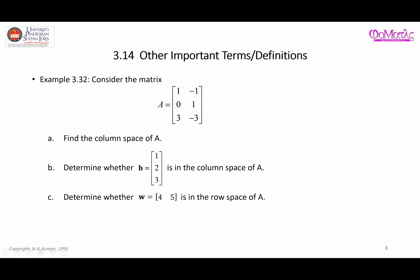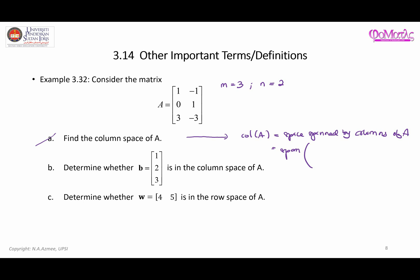Here is a matrix A. Clearly m equals 3 — we have 3 rows — and n equals 2 columns. So this is a 3 by 2 matrix. The column space of A, according to the definition, is the space spanned by the columns of A, which means the span of the vectors (1, 0, 3) and (−1, 1, −3). That is the answer to the first question.